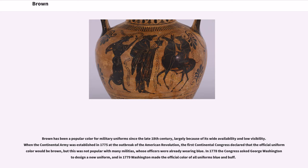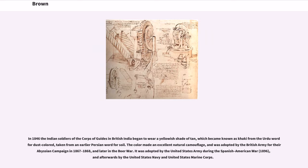Brown has been a popular color for military uniforms since the late 18th century, largely because of its wide availability and low visibility. When the Continental Army was established in 1775 at the outbreak of the American Revolution, the First Continental Congress declared that the official uniform color would be brown, but this was not popular with many militias whose officers were already wearing blue. In 1779, Washington made blue and buff the official color of all uniforms. In 1846, Indian soldiers of the Corps of Guides in British India began to wear a yellowish shade of tan, which became known as khaki — from the Urdu word for dust-colored — an excellent natural camouflage adopted by the British Army in their Abyssinian campaign of 1867–1868, and later in the Boer War, and afterwards by the United States Army, Navy and Marine Corps.